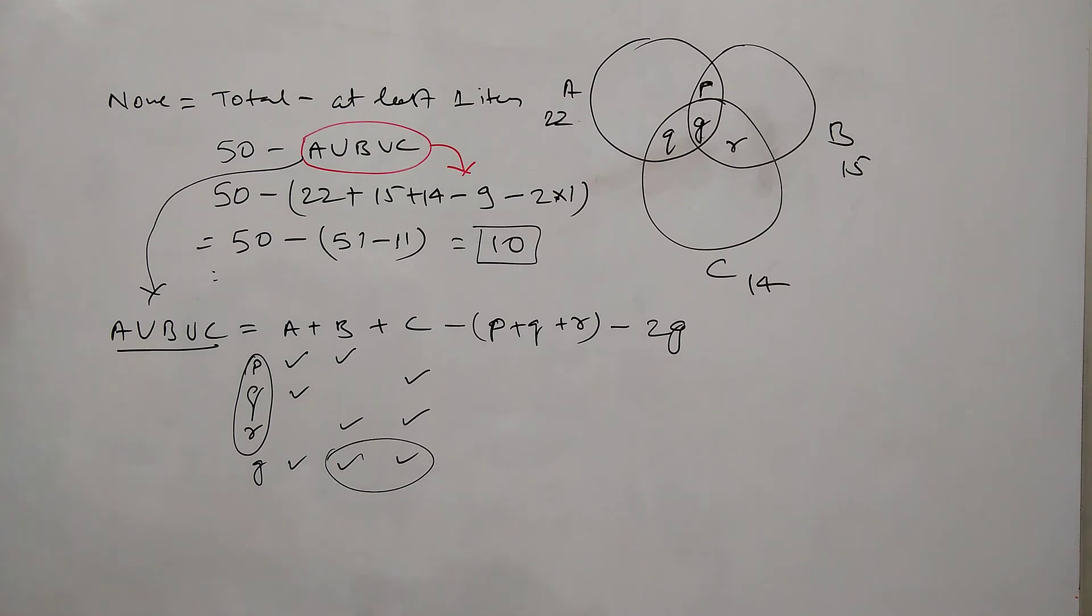So now if you see when we were using the direct formula, this 2 into 1 is nothing but it came from here. The 9 came from here. It was already given in the question that people who own exactly 2 items is 9.